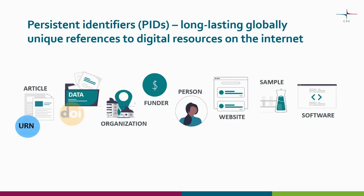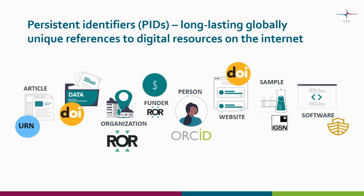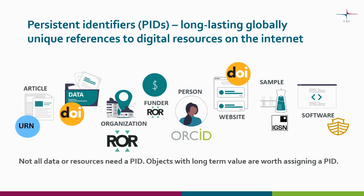Examples of PIDs include the Digital Object Identifier (DOI), Handle, Archival Resource Key, Open Researcher and Contributor ID (ORCID), and Research Organization Registry. Note that not all resources you produce during your research will need a PID. In general, those that underpin published findings or objects that have longer-term value are worth assigning a PID. It can also be a good idea to publish content you created but did not use yet or will not use.